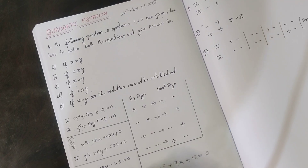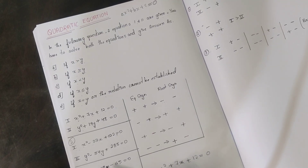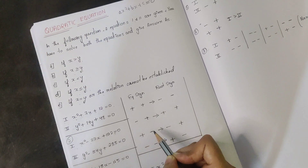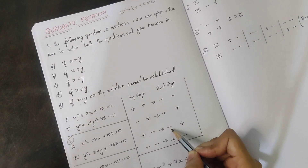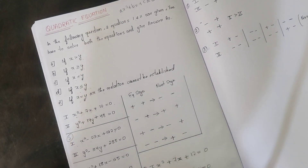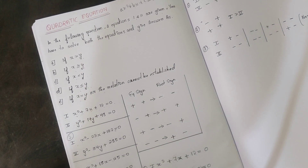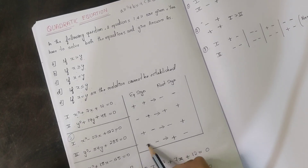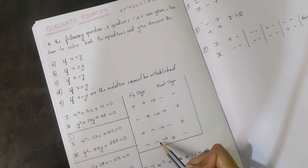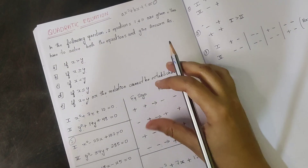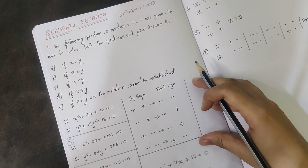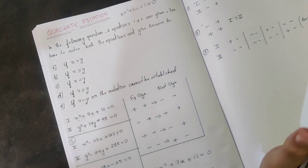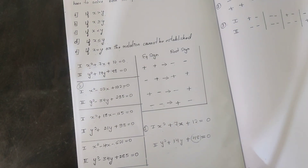For the third question, equation sign plus-minus gives root sign minus-plus. For the fourth one: x² - 4x - 621 = 0, the equation sign is minus-minus, so the root sign is plus-minus. The root sign method is easy to solve compared to the traditional method.